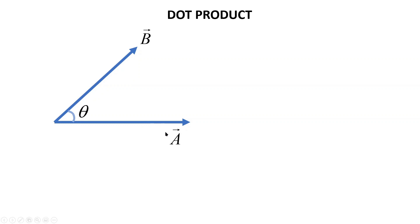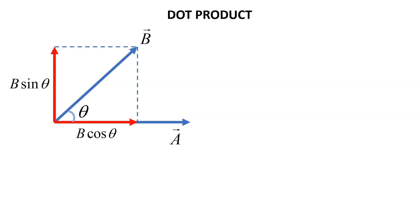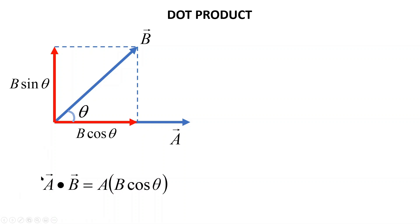Now let us dig deeper into dot product. Here we have two vectors, vector a and vector b, separated by angle theta. To multiply these two vectors using dot product, we first resolve vector b into two components: the parallel component to vector a, which is b cos theta, and the perpendicular component, b sin theta. For an angle we use cos theta; no angle, we use sin theta.